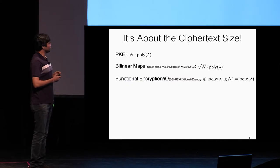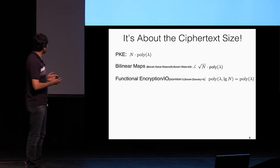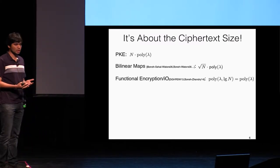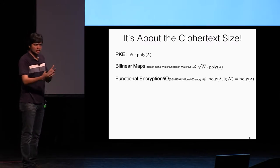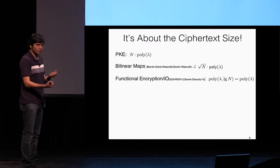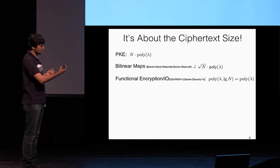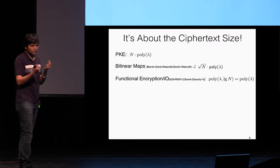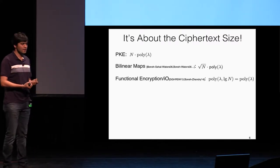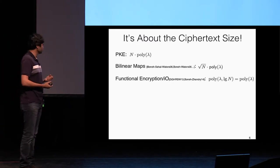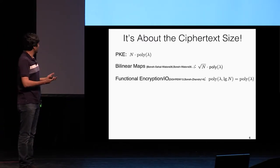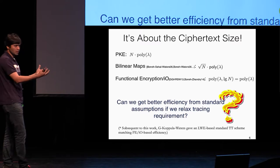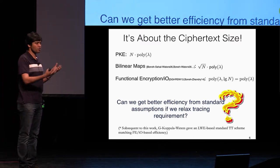Before this work, there were three main pathways to build a traitor tracing system: from public key encryption, from bilinear maps, and from functional encryption and indistinguishability obfuscation. The difference between these approaches was efficiency. Regular public key encryption had bad efficiency — the ciphertext size had to grow linearly with the number of users n. With bilinear maps we could improve it slightly, but with functional encryption and indistinguishability obfuscation, you can get optimal ciphertext size. The question we pose in this work is: maybe getting a full traitor tracing system is hard, but what if we relax the tracing requirements slightly — can we build efficient systems from standard assumptions?